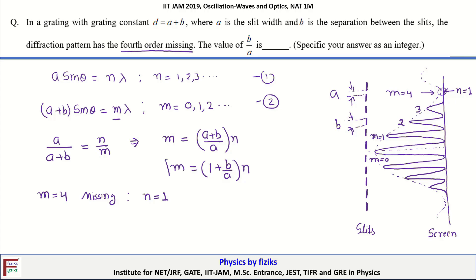We can put these values in the above equation and we will get: 4 equal to (1 plus b by a) times 1. If we solve this equation, we will get b by a equal to 3. The correct answer of this question is 3.